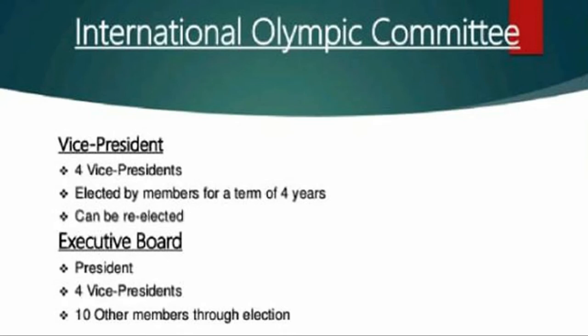The IOC executive board consists of the president, four vice presidents, and ten other members. All members of the IOC executive board are elected by the IOC session through a secret ballot by a majority of votes cast. The IOC executive board assumes general overall responsibility for the administration of the IOC and the management of its affairs.